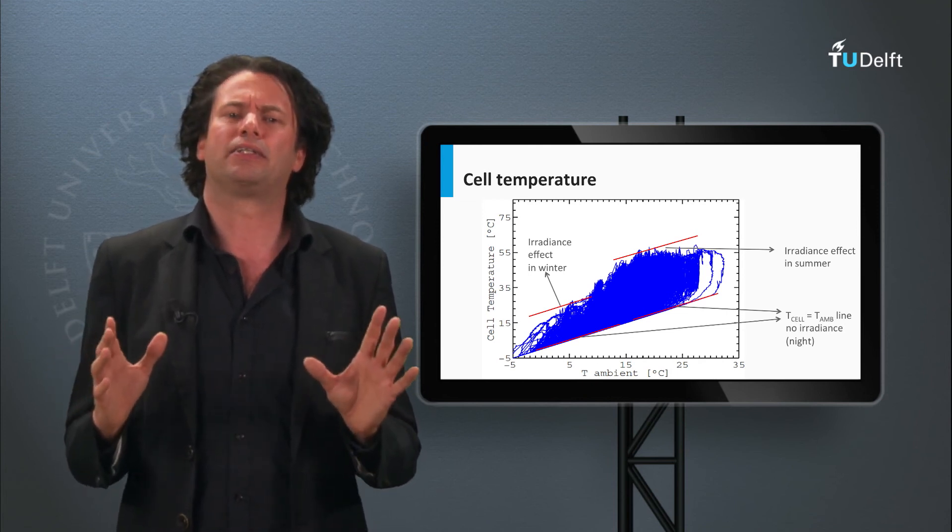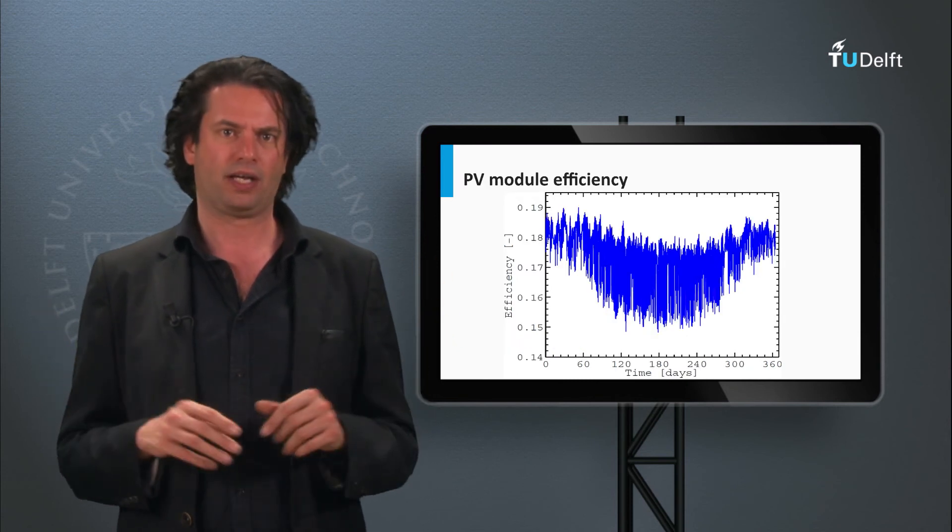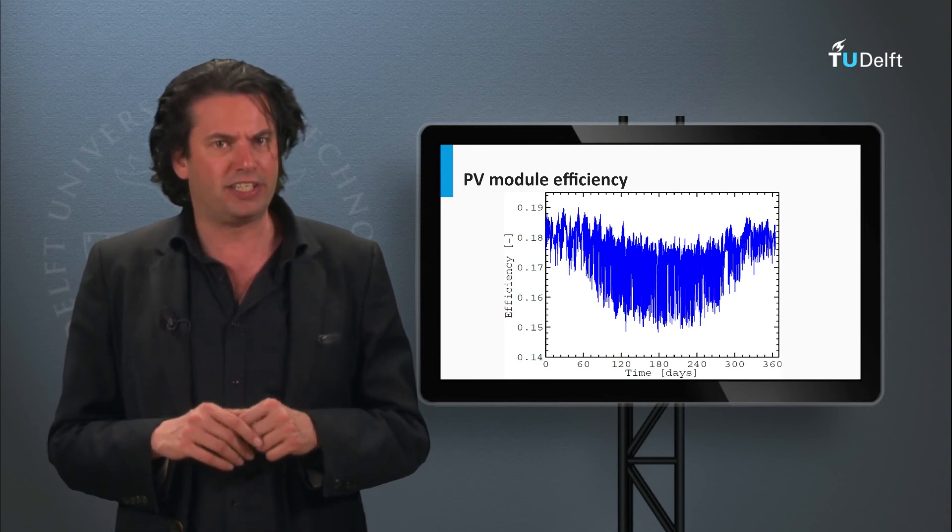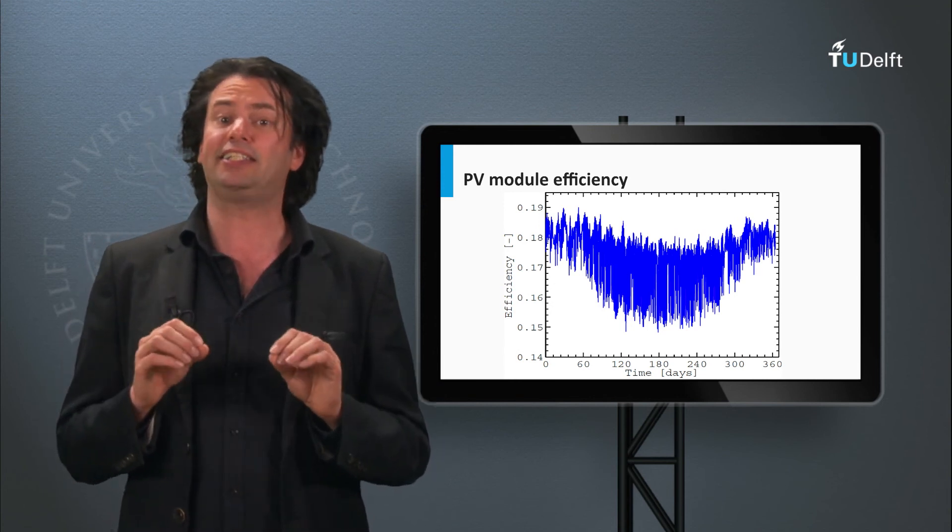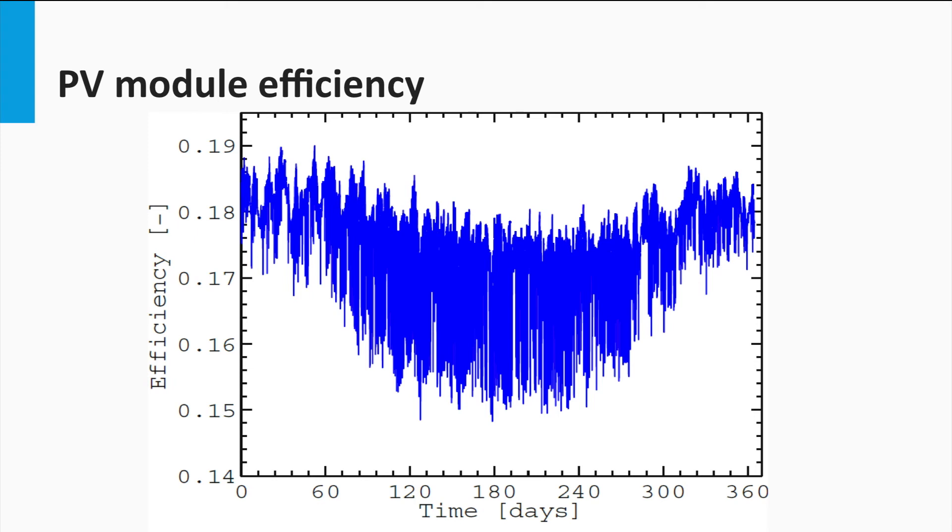So how serious can this temperature effect be for our PV modules output over the calendar year? At the PVMD group of the Delft University of Technology, we have done an extensive study on the temperature effects on the PV modules output. In this graph you can see the efficiency of a PV module over a calendar year as modeled using actual temperature and irradiance data for the Netherlands in 2012. It can be clearly seen how the efficiency is not constant but changing with the ambient conditions over the year.